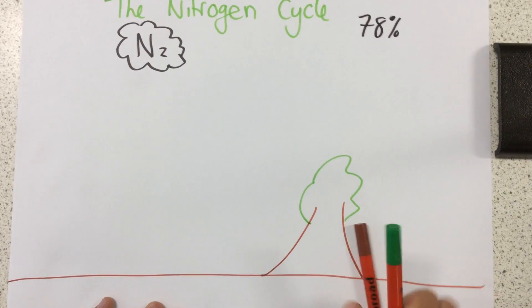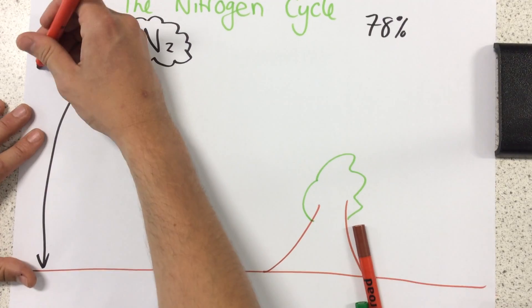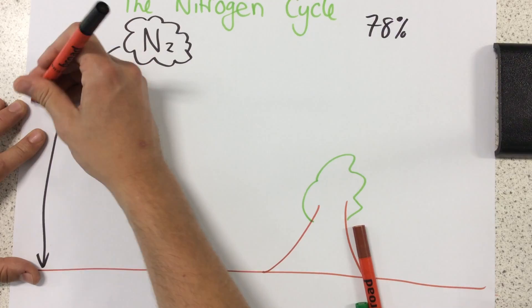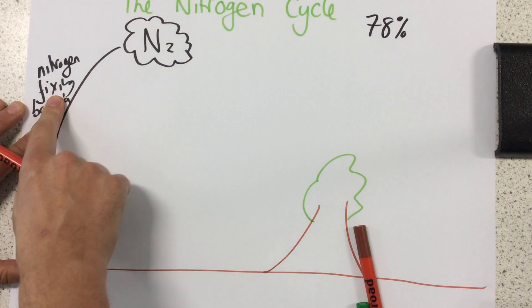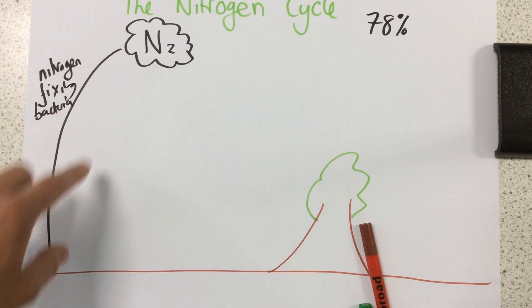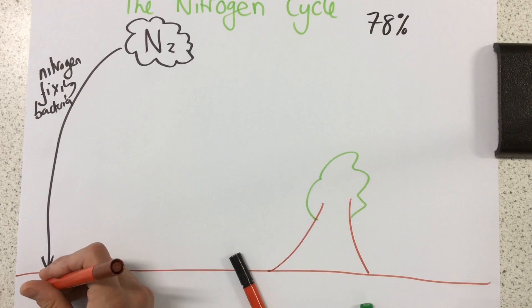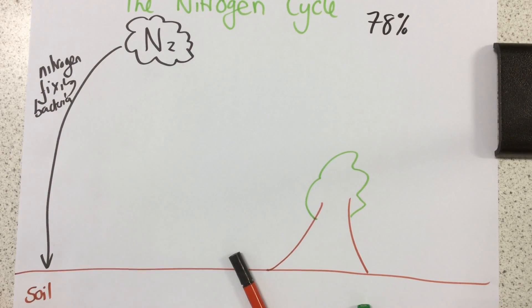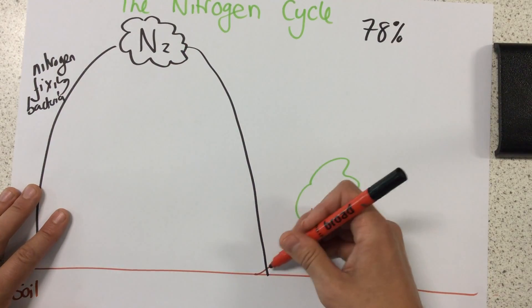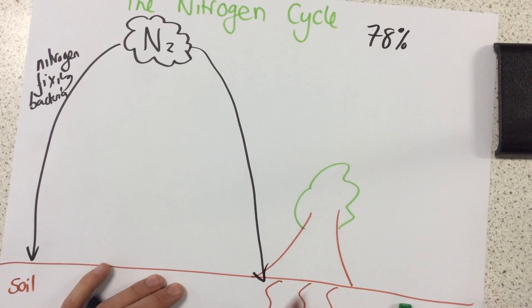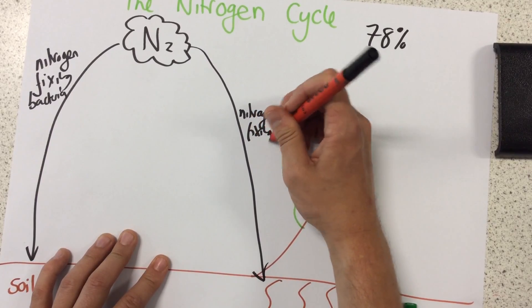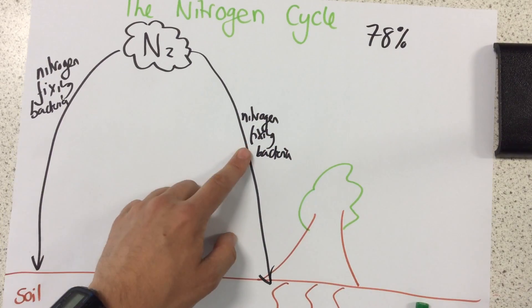Our first type of bacteria is called nitrogen-fixing bacteria. Whenever we have nitrogen-fixing, the word 'fixing' means removing nitrogen from the atmosphere. We're taking it from the atmosphere, and nitrogen-fixing bacteria are found in the soil and also in the roots of plants. So that's the first type of bacteria we need to know about: nitrogen-fixing bacteria.